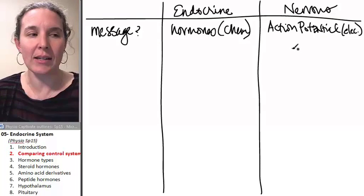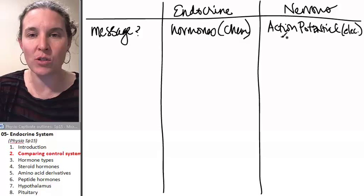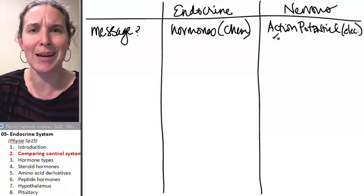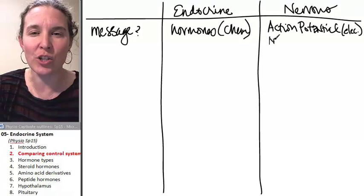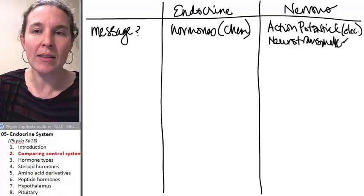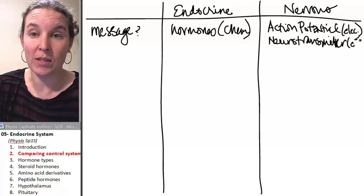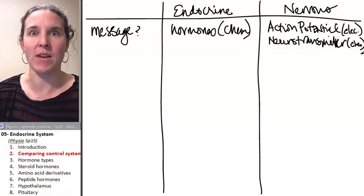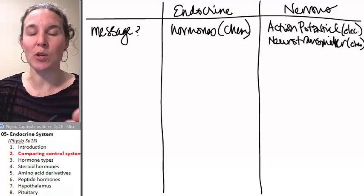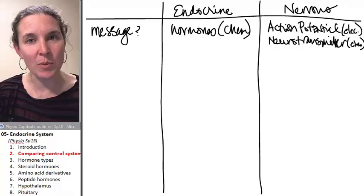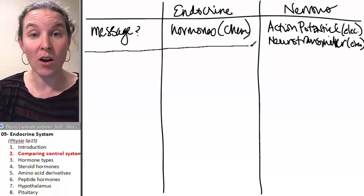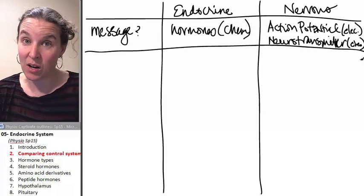The electrical message is not the end of the story. There also is a chemical component of the nervous system's communication techniques, and that's called a neurotransmitter, and this is chemical. So see me write chem right there? I fit it in. Endocrine, only chemical. Nervous system, we've got an action potential, which is electrical, and the neurotransmitter, which is chemical at the end. So you can see that our messages themselves are different.